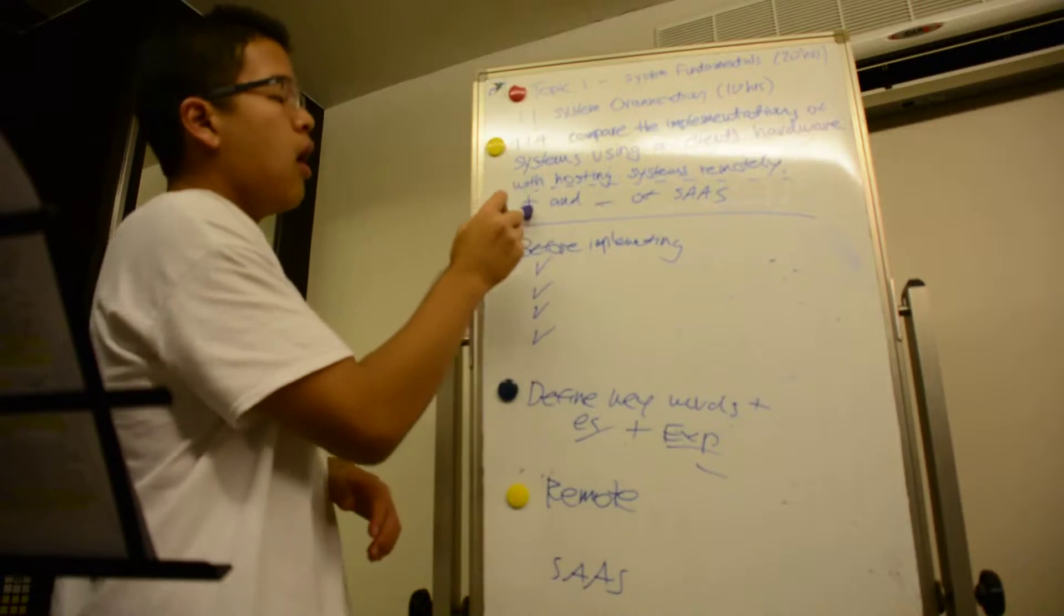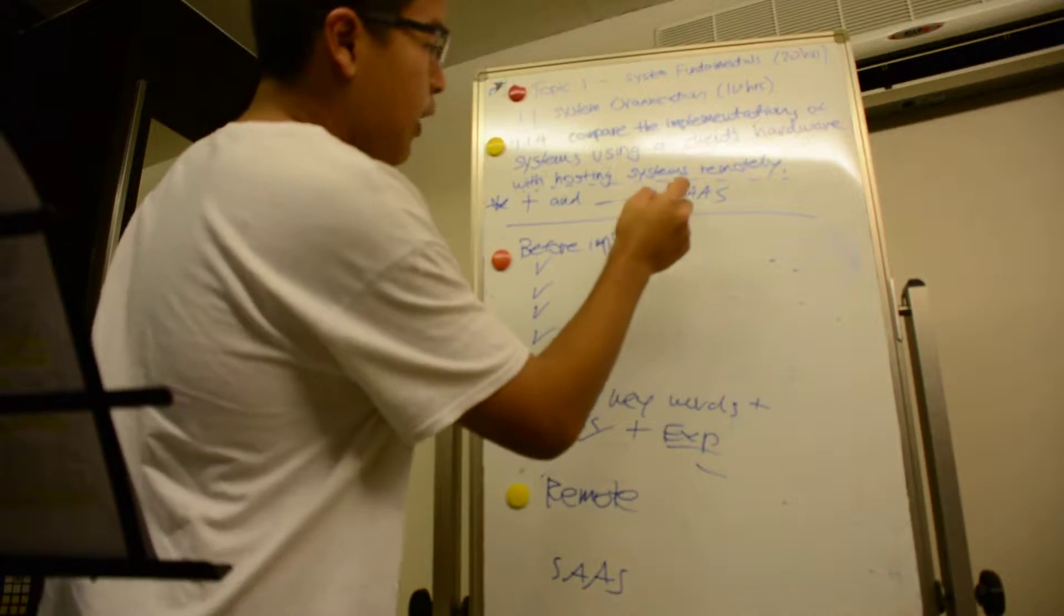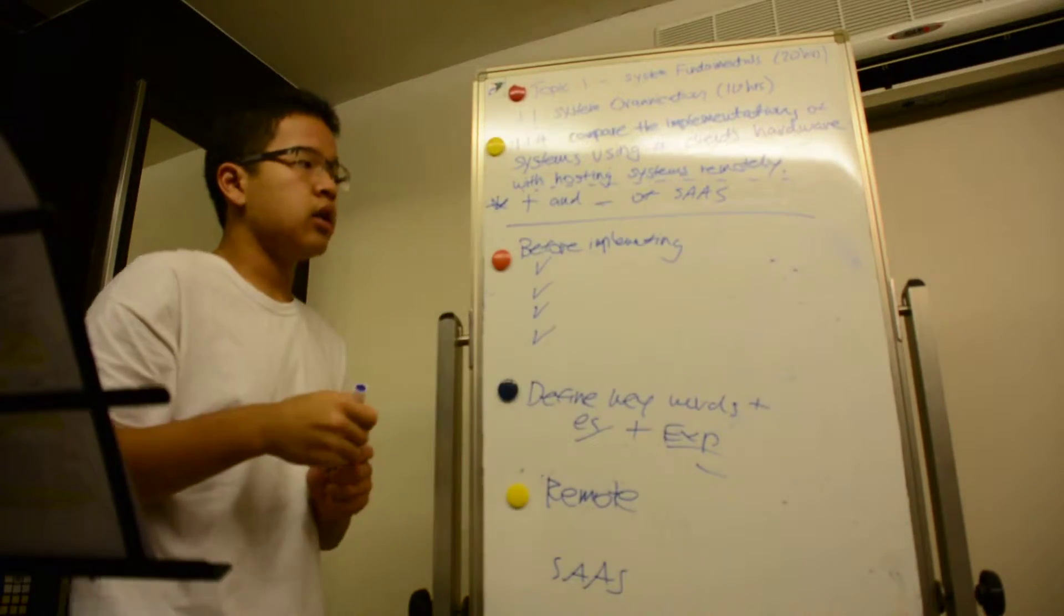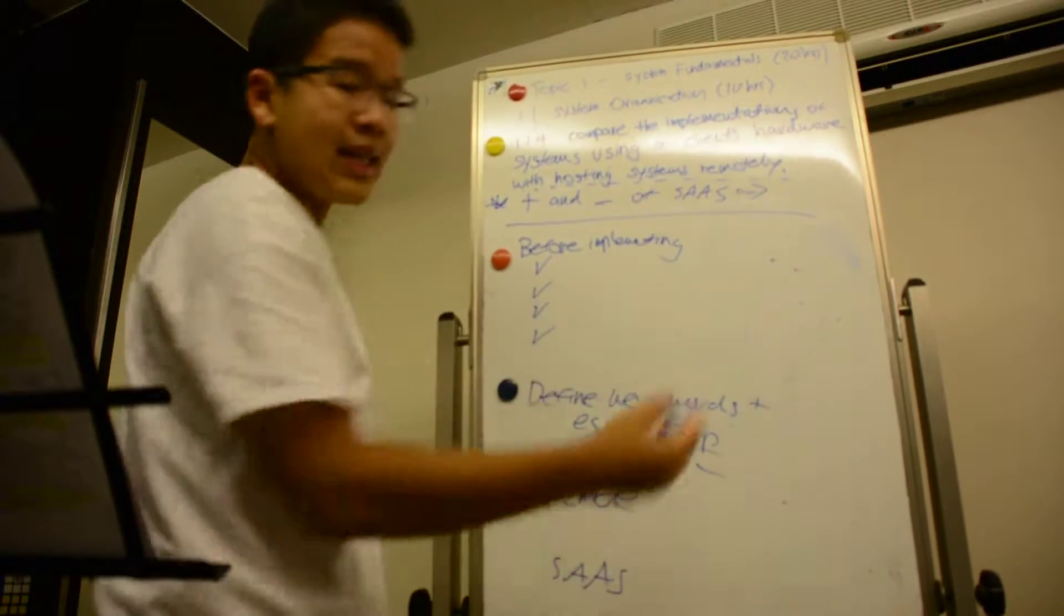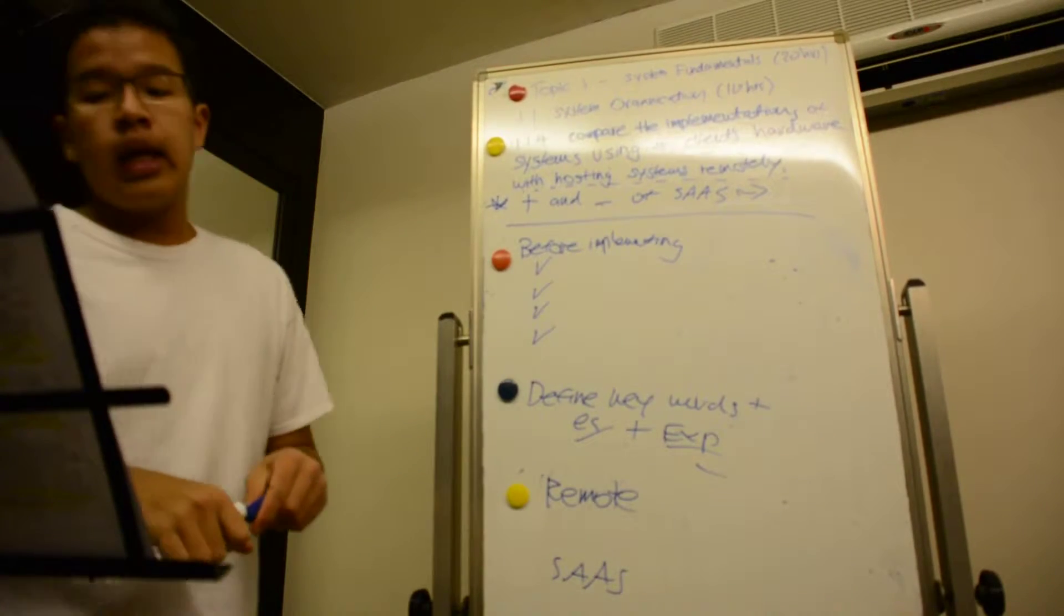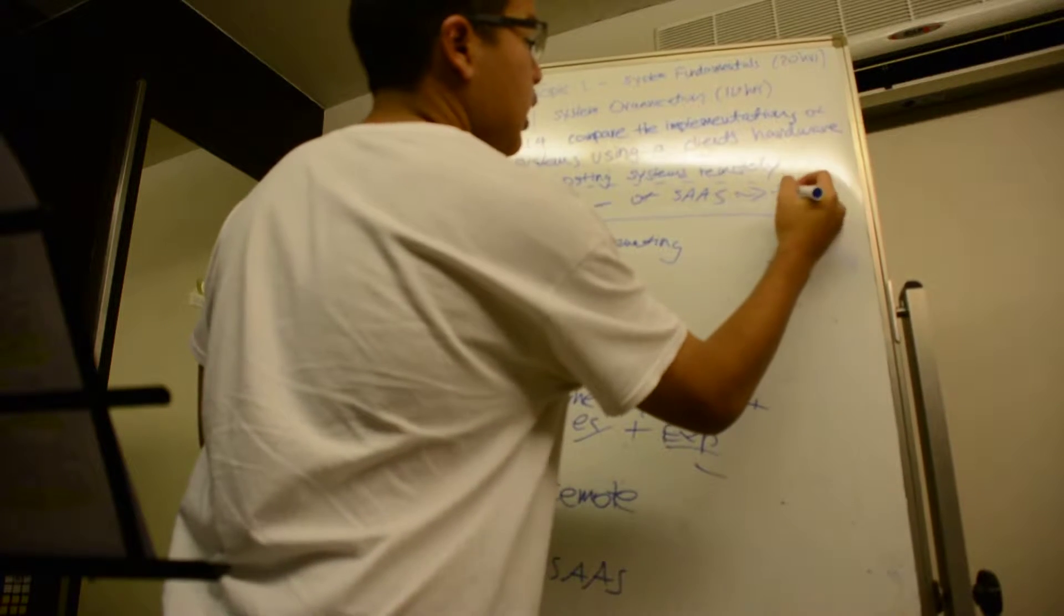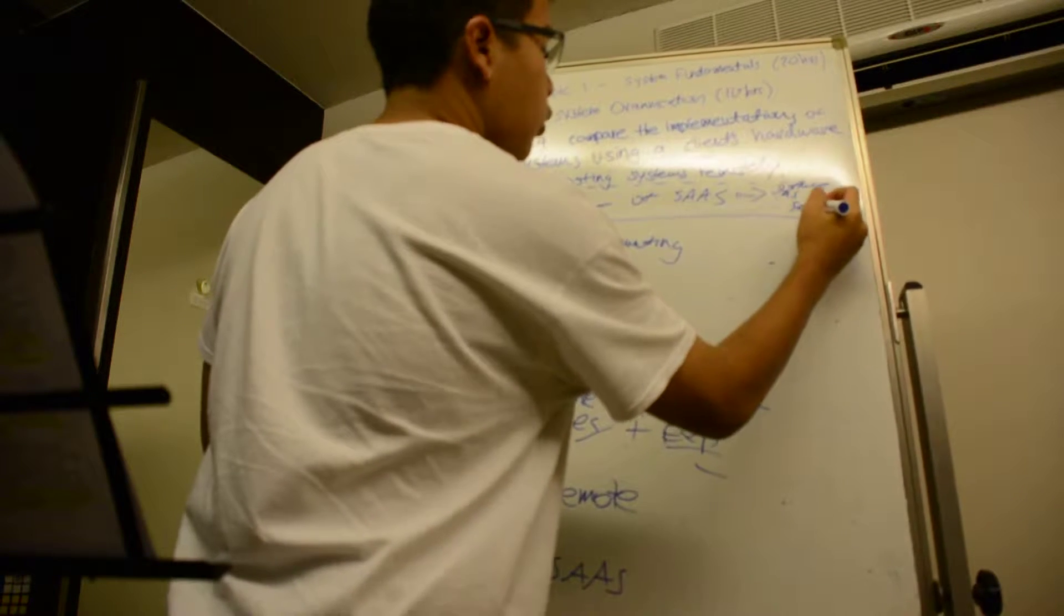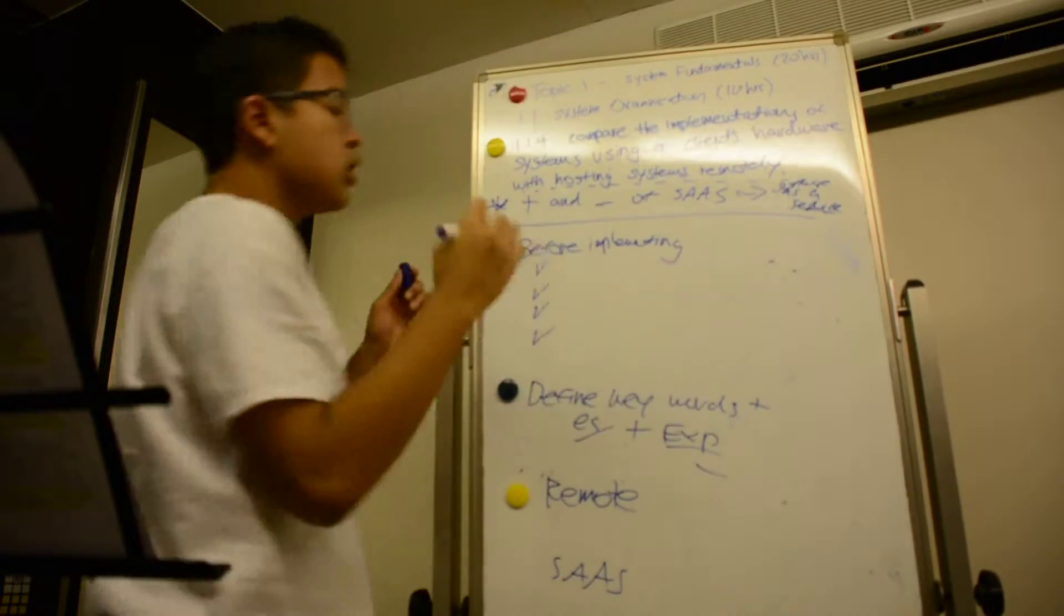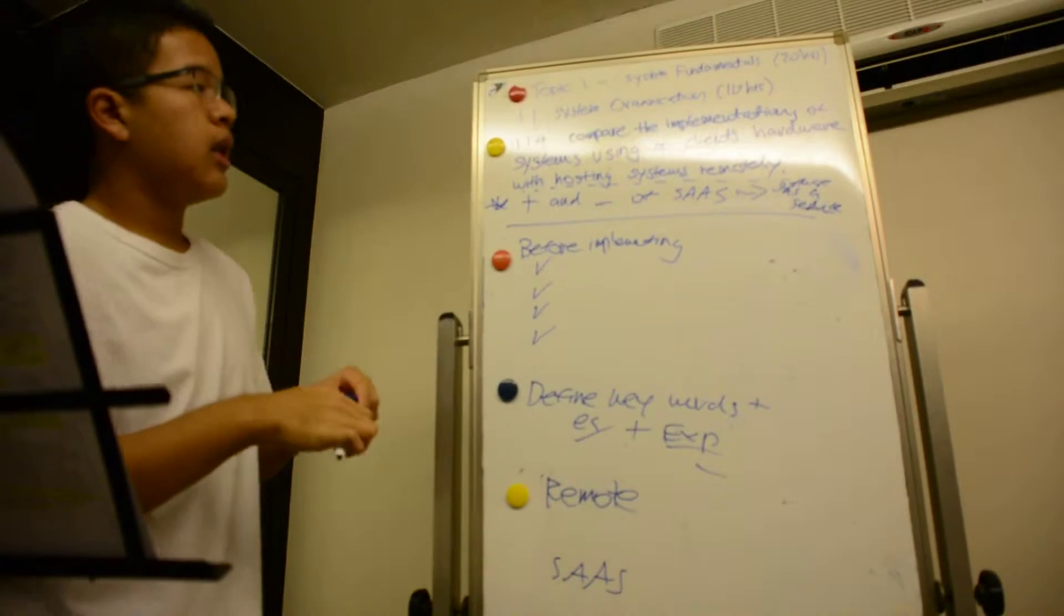And I'll start off with, what is SAAS? It is software as a service. We'll get back to this later on. So before implementing the system, there are special things and requirements that you have to do.